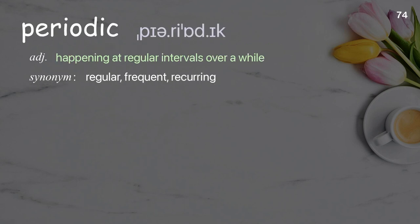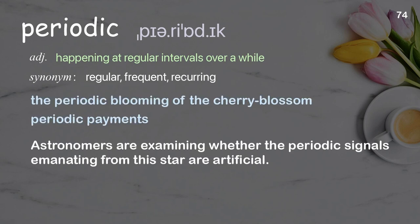Periodic: happening at regular intervals over a period of time. Examples: the periodic blooming of the cherry blossom; periodic payments. Astronomers are examining whether the periodic signals emanating from this star are artificial.